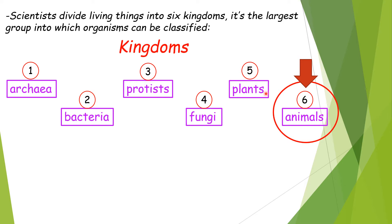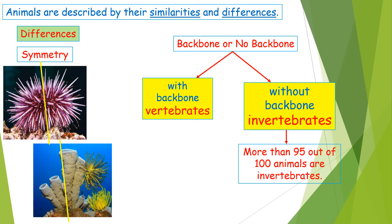So how can we describe animals? We can describe them according to their similarities and differences — which means how they are alike and how they are different. Here we're going to discuss two differences in animals.